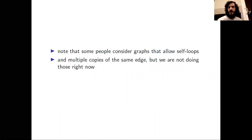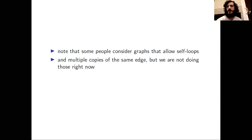Later in the course we will consider some graphs that allow self-loops, but for now we're not going to allow any self-loops. Furthermore, there are some cases in which we would be interested in graphs that have multiple copies of the same edge, but we're not going to be concerned with those kinds of graphs in today's video. So we're not going to allow any self-loops and we're not going to allow any repeated edges.